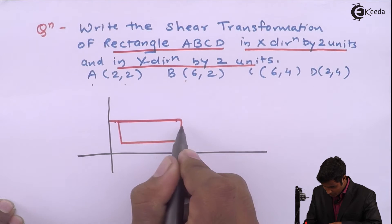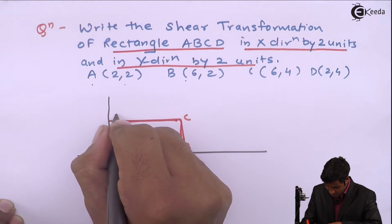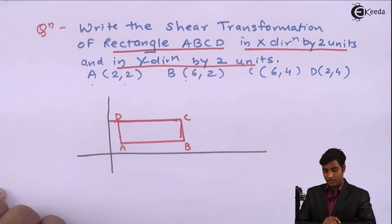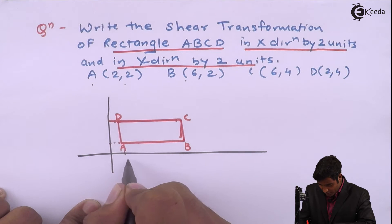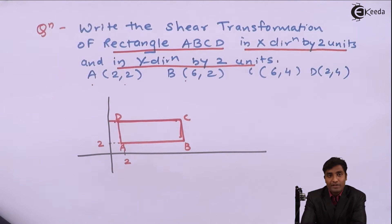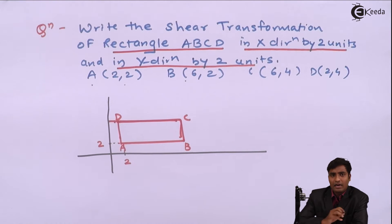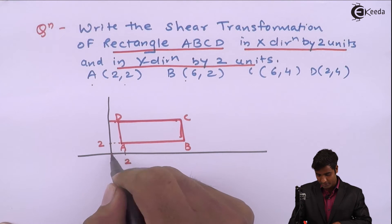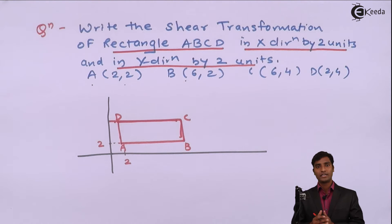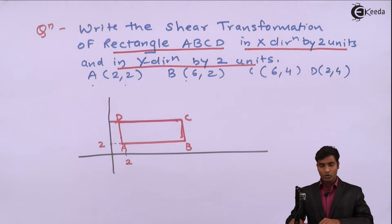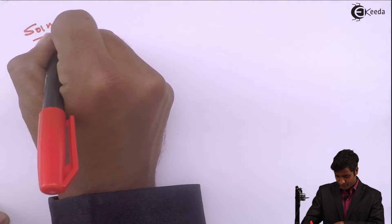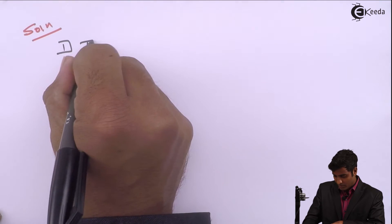This is rectangle ABCD. The coordinates are given and A is not at the origin, which means coordinate A is (2,2). We have to translate point A to the origin. Unless we translate point A to origin we cannot perform the shear transformation. So we will translate point A to origin, then do shear transformation along x direction and shear transformation along y direction. The first transformation will be translation.